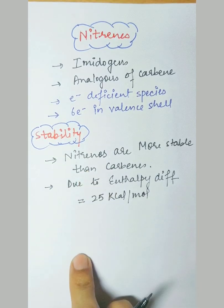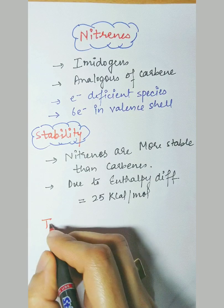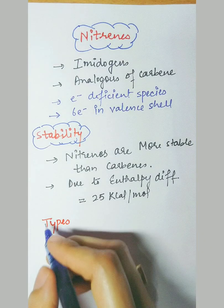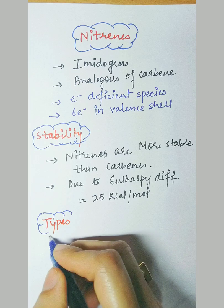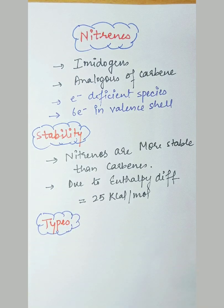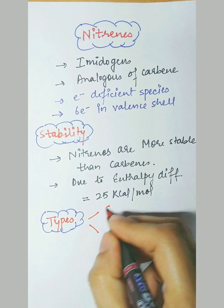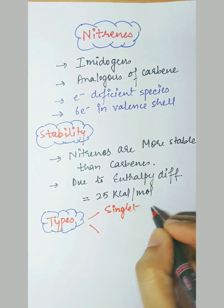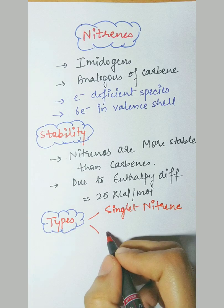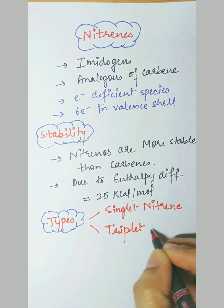Now we will talk about the types of nitrines. As we have already said, they are analogous to carbenes, so they are of two types: the first one is the singlet nitrine, and the second one is the triplet nitrine.